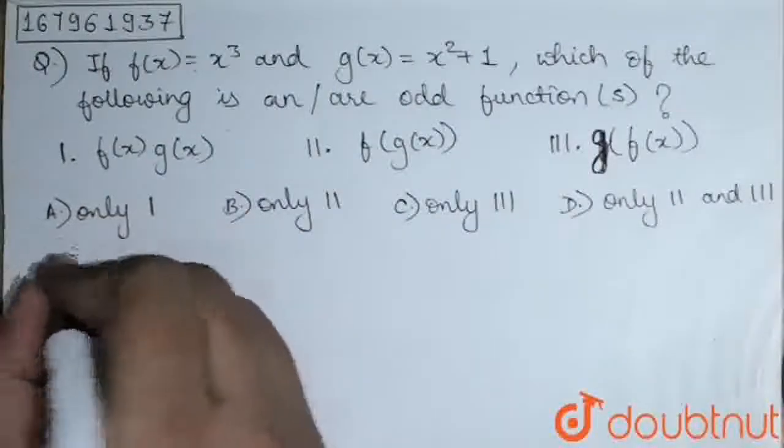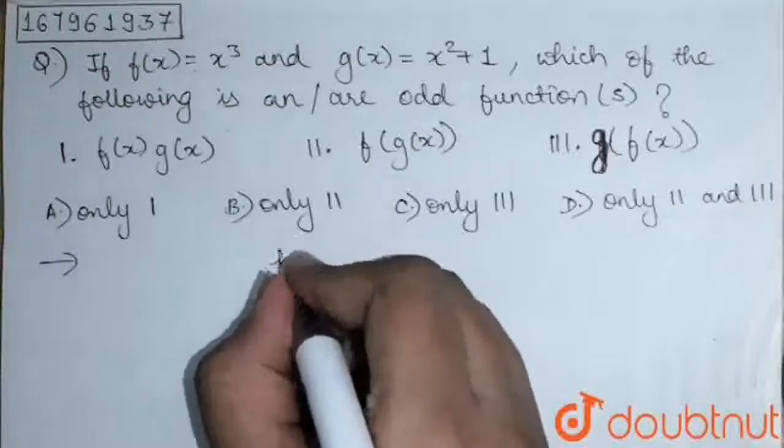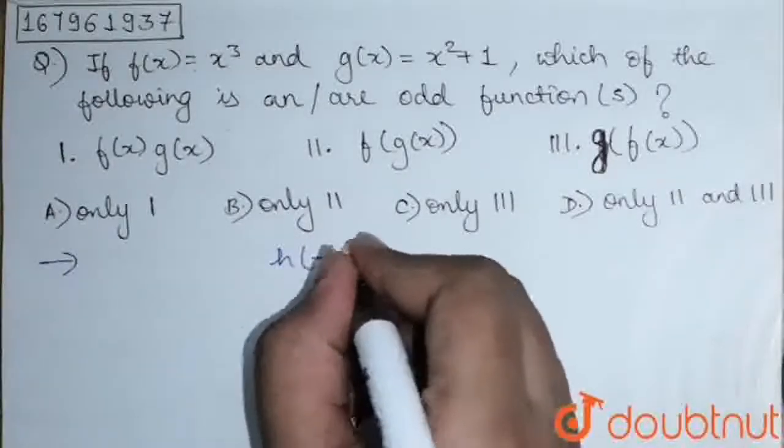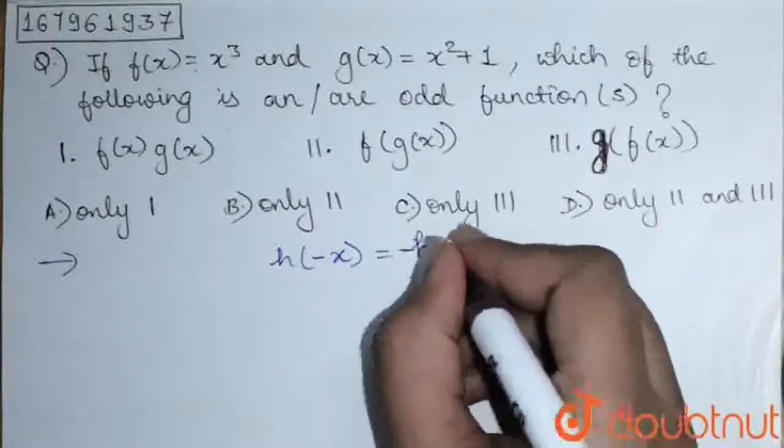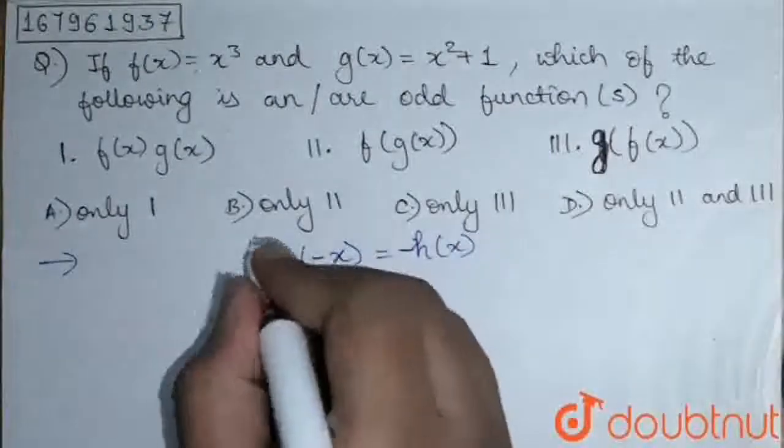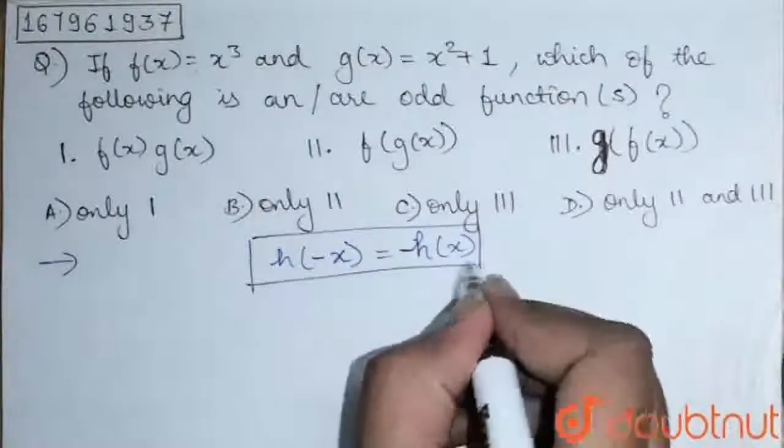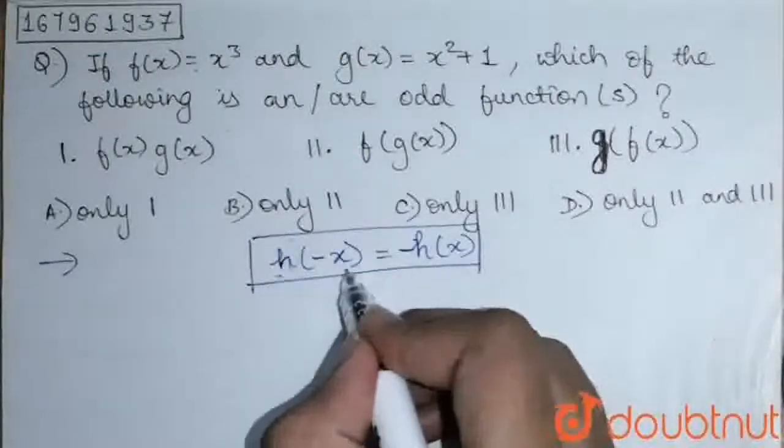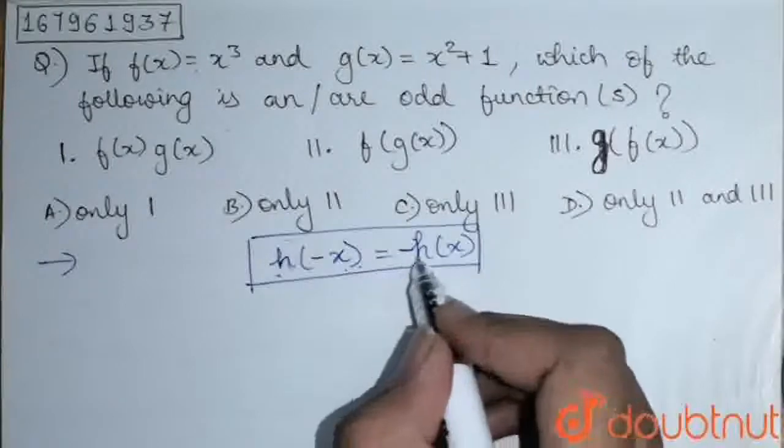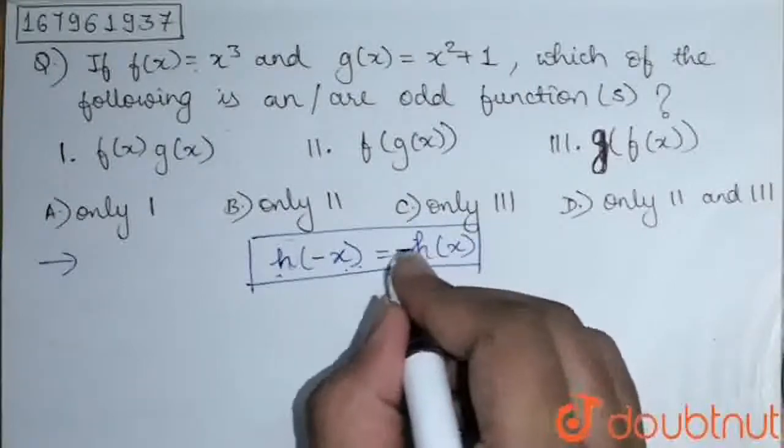First of all, what is the property of odd functions? The property of odd function is h(-x) equals -h(x). For any function to be odd, it has to satisfy this property. Let h be any function in x, then h(-x) should be -h(x).